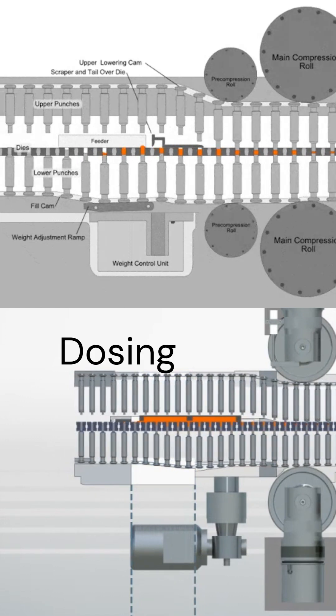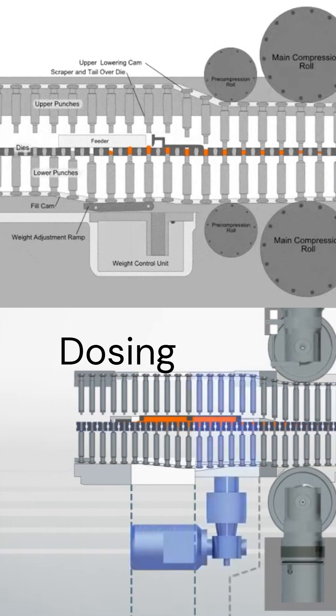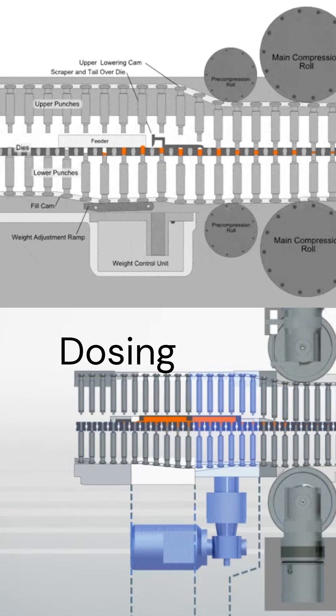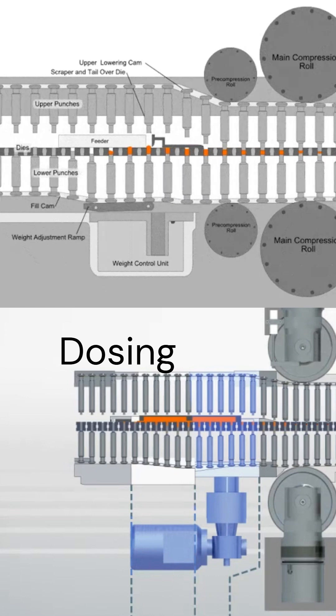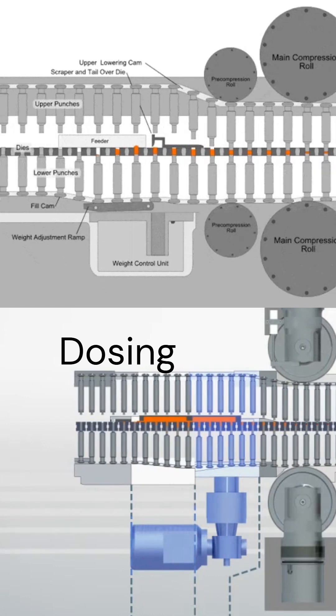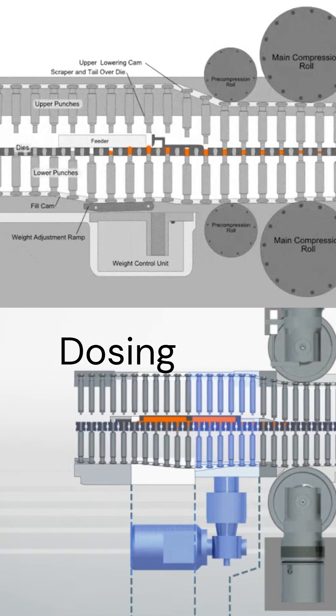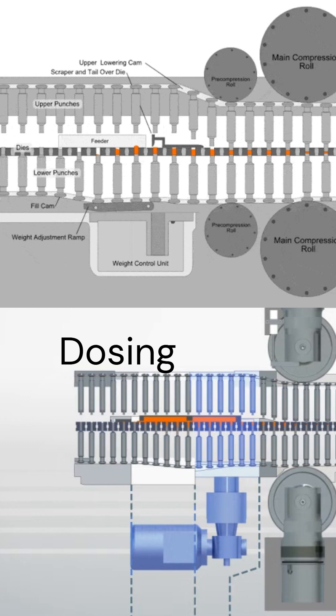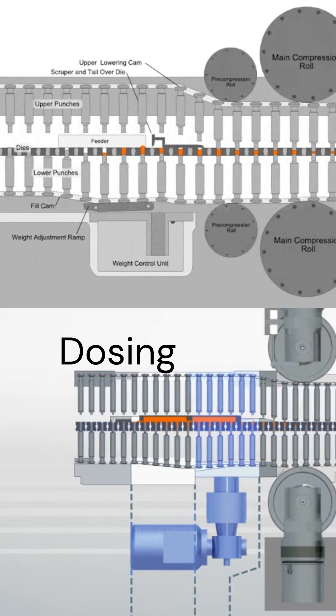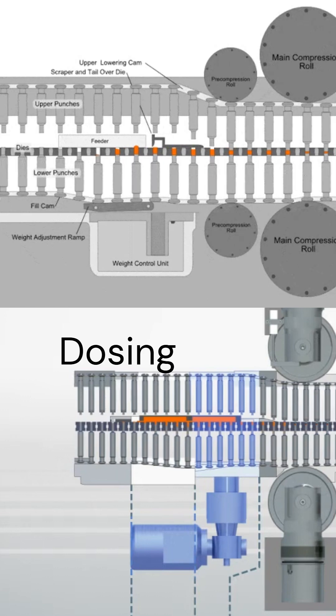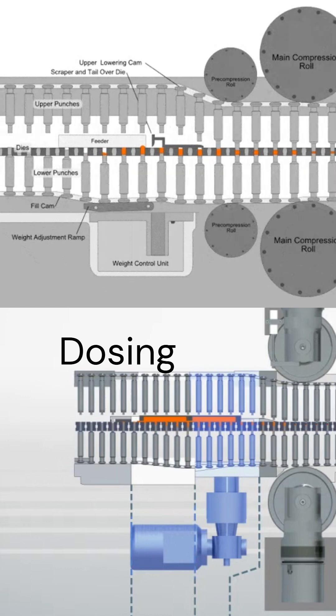At the dosing cam position, the punch moves up, pushing the excess material out of the die and into the second chamber of the double paddle feeder. The dosing cam is motorized so that the height can be changed. This will be initiated by the tablet press weight controller. The scraper blade installed after the feeder will then remove the excess powder as the die passes by.